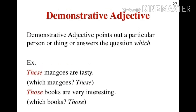As we know that demonstrators are used for indicating near and far objects. Demonstrative adjective points out a particular person or thing, or answers the question 'which.' For example, 'These mangoes are tasty.' 'Those books are very interesting.' These and those are the answers of the question 'which mangoes' and 'which books.'